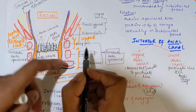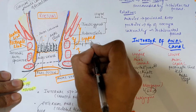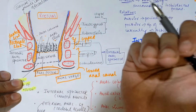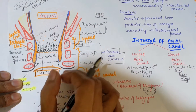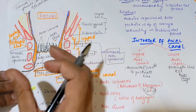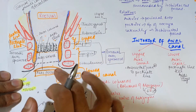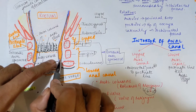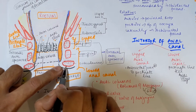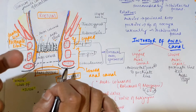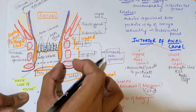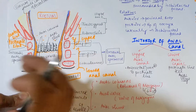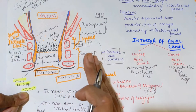The superficial part of the external anal sphincter surrounds the lower portion of the internal anal sphincter. The subcutaneous part lies in the perianal space — the fatty tissue area below the internal anal sphincter — and covers the lower part of the anal canal. So the internal sphincter is the orange structure in the diagram, and the three parts of the external sphincter surround it at different levels.